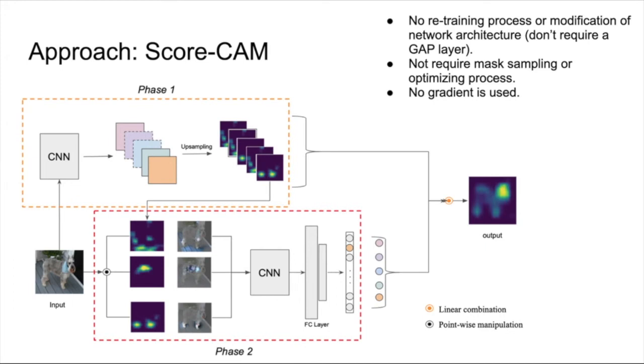In stage 2, for each activation map, we first smooth it by normalizing the value into 0 to 1. Then we mask the input and get the score on target class of masked input. Note that stage 2 will be repeated many times depending on the number of activation maps with their corresponding weights.